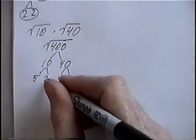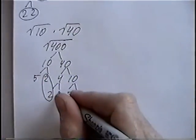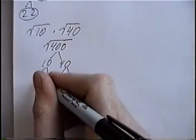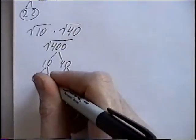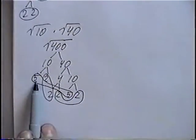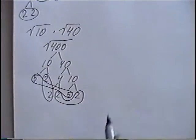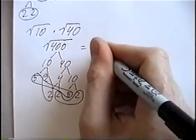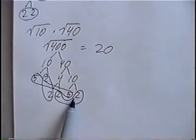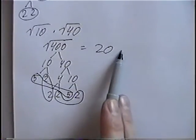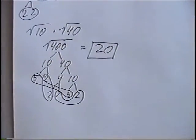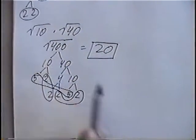You can circle any pairs of numbers. We have a pair of 2s, another pair of 2s, and also a pair of 5s across the factor tree. Any time you circle more than one set, you can multiply those together: 5 times 2 is 10, times 2 more is 20 — that's the number outside the radical. Looking at the factor tree, there are no numbers that we did not circle, so there are no numbers inside the radical sign. Our final answer is 20, because 20 times 20 is 400.